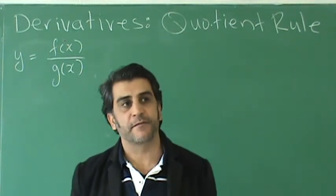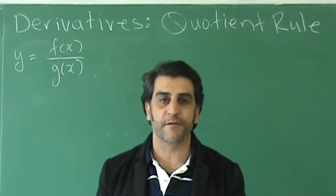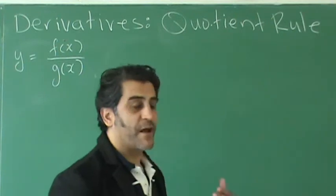Finding the derivative meaning that we're finding an expression for slope of a tangent or instantaneous rate of change. When can we use the quotient rule? When we have a rational function.